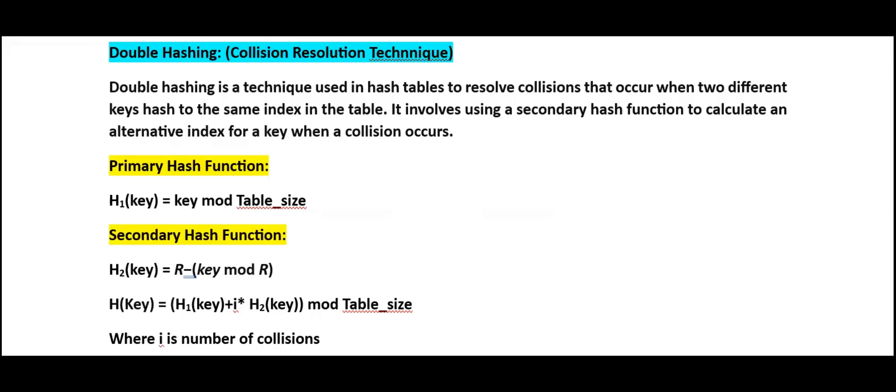A collision in the context of a hash table occurs when two distinct keys produce the same hash value, resulting in them being mapped to the same index in the hash table. This situation can arise due to the finite size of the hash table relative to the potentially infinite set of keys that may need to be stored. Double hashing is one of the closed hashing techniques.